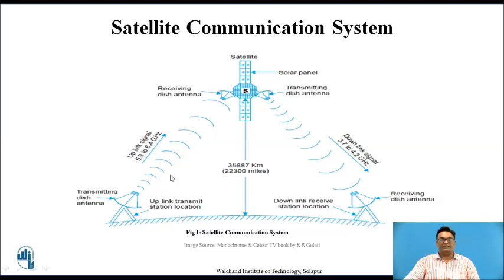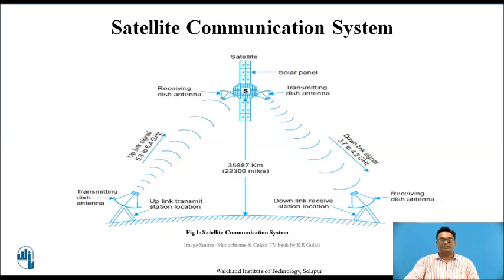The transmitting frequency is generally known as the uplink frequency, and the retransmitted frequency sent from the satellite to the Earth station antenna is generally known as the downlink frequency. The uplink frequency generally ranges from 5.9 to 6.4 GHz, and the downlink frequency generally ranges from 3.7 to 4.2 GHz. The satellite has two antennas — a receiving antenna and a transmitting antenna — and also consists of solar panels, which accumulate solar rays and are used for charging the batteries in the satellite.